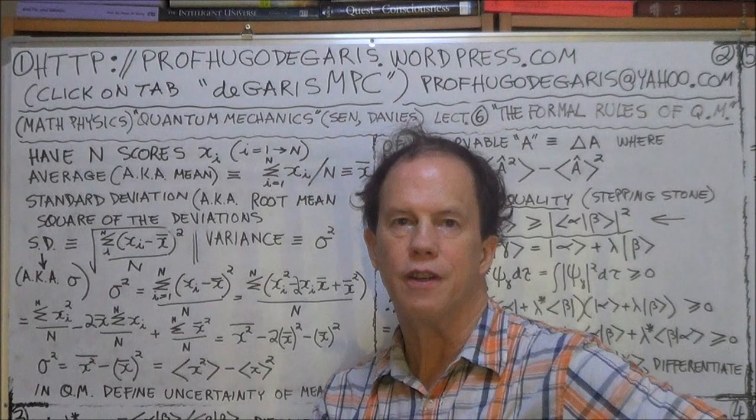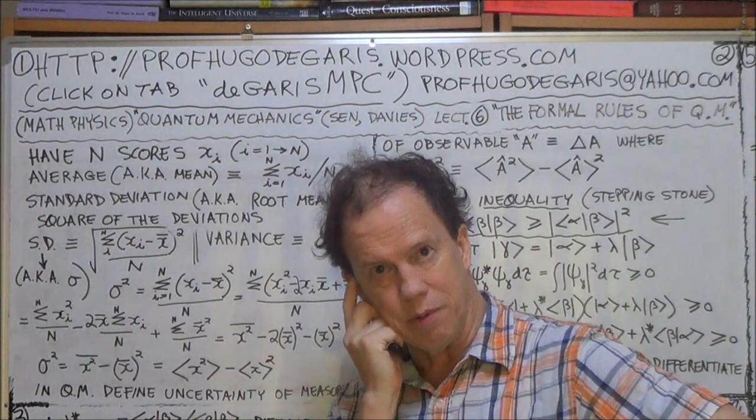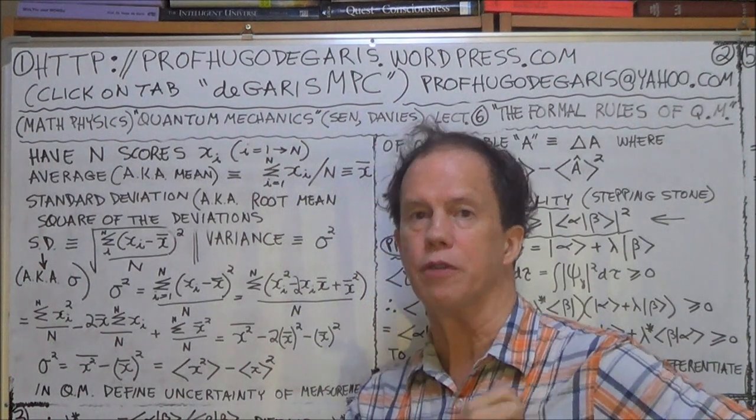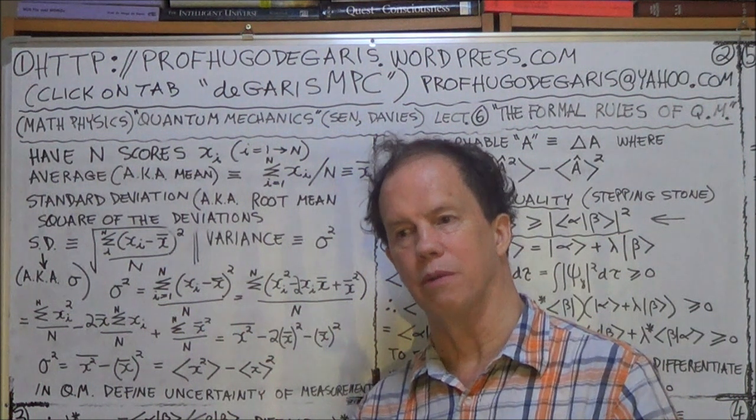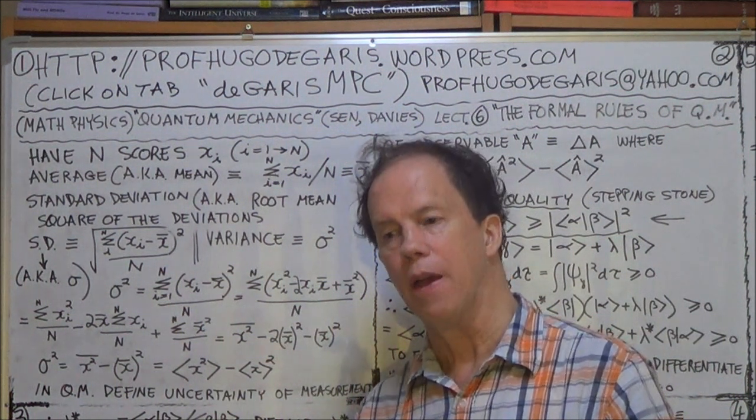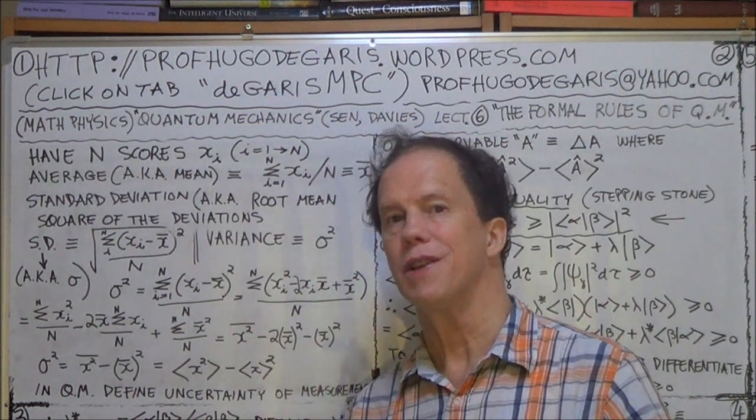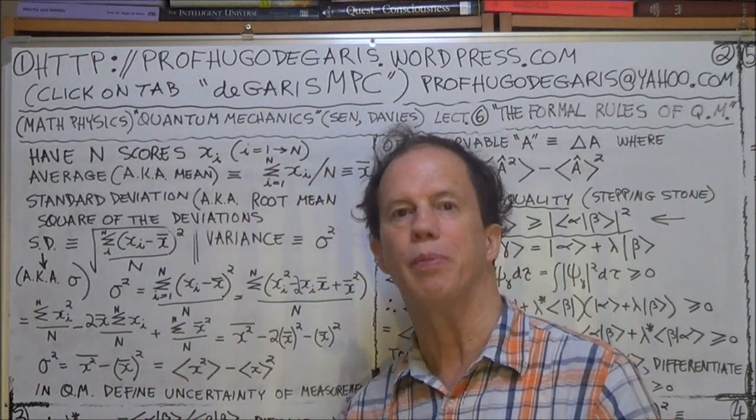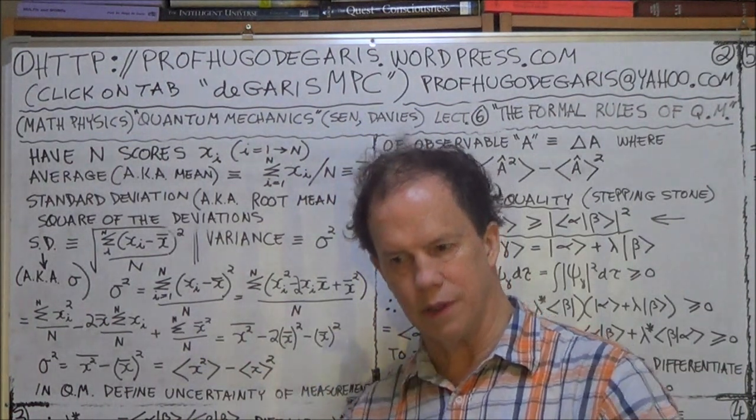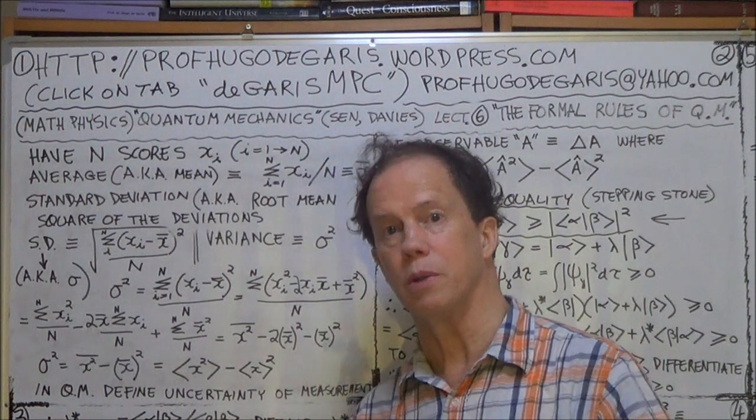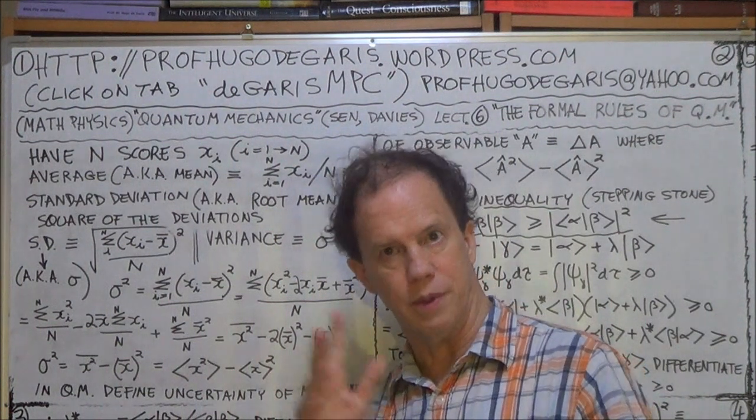At the end of the previous session, I said I would give you a quick overview of what a standard deviation is, what variance is, because I'm heading towards a generalization of the HUP, the Heisenberg Uncertainty Principle. I'll find an equivalent uncertainty principle between any two incompatible observables, A and B.